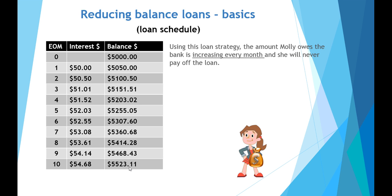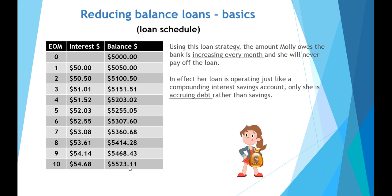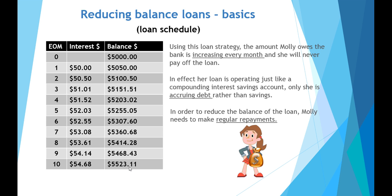With this strategy, the amount Molly owes has increased every month — from $5,000 to $5,523.11 after 10 months, so she'll never pay off her loan. What she's actually doing is accruing debt. The interest is accumulating much like a savings account, except in this case it's money she owes, so the debt is increasing rather than saving. In order to reduce the balance of the loan, Molly needs to make regular repayments.